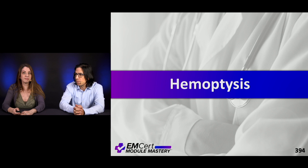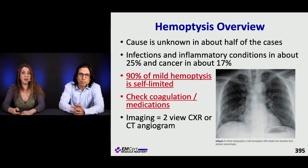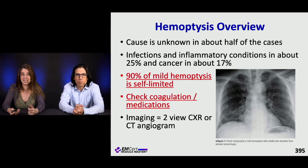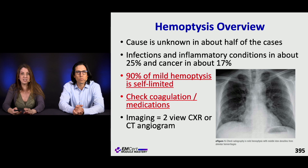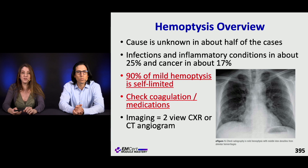Let's get into some hemoptysis. The cause is unknown in about half of cases, infections and inflammatory conditions account for about a quarter, and cancer about 17 percent. Most of the time hemoptysis is self-limited. It's important to check their medication list to see if they're on anticoagulants. For imaging you can do a two-view X-ray to start, but most of these patients are getting a CT angio.